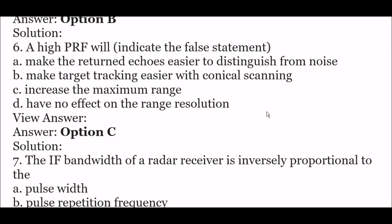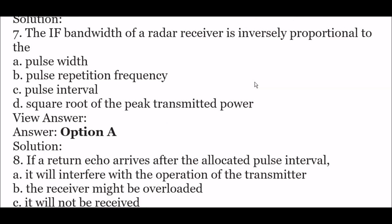Next question: a high PRF will — indicate the false statement. Option A: make the returned echoes easier to distinguish from noise, option B: make target tracking easier with conical scanning, option C: increase the maximum range, option D: have no effect on the range resolution. The right answer is option C — a high PRF will increase the maximum range is the false statement.